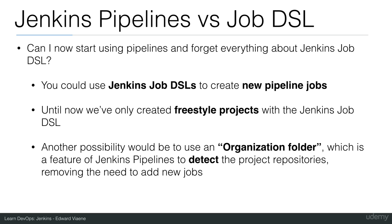You could use Jenkins Pipelines with multiple repositories in an organization folder. When there's a new project, Jenkins can detect that and will automatically build your new project. There are definitely multiple possibilities to achieve kind of the same result. In an ideal world, you would want to just create new projects and have Jenkins automatically build them, with the build code saved in version control.